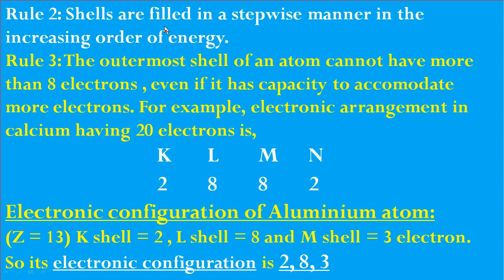The second rule: shells are filled in a stepwise manner in the increasing order of energy — K, L, M, N. The third rule: the outermost shell of an atom cannot have more than 8 electrons, even if it has the capacity to accommodate more. For example, how to write the electronic configuration of calcium, which has 20 electrons: K shell gets 2, L shell gets 8, M shell gets 8 (not 10, because the outermost shell cannot exceed 8), and the remaining 2 go to the N shell. So calcium's electronic configuration is 2, 8, 8, 2.